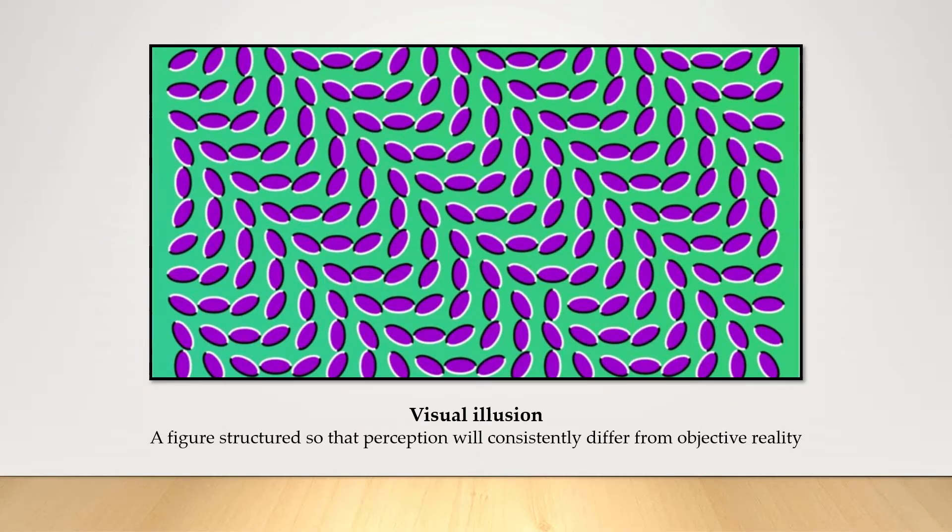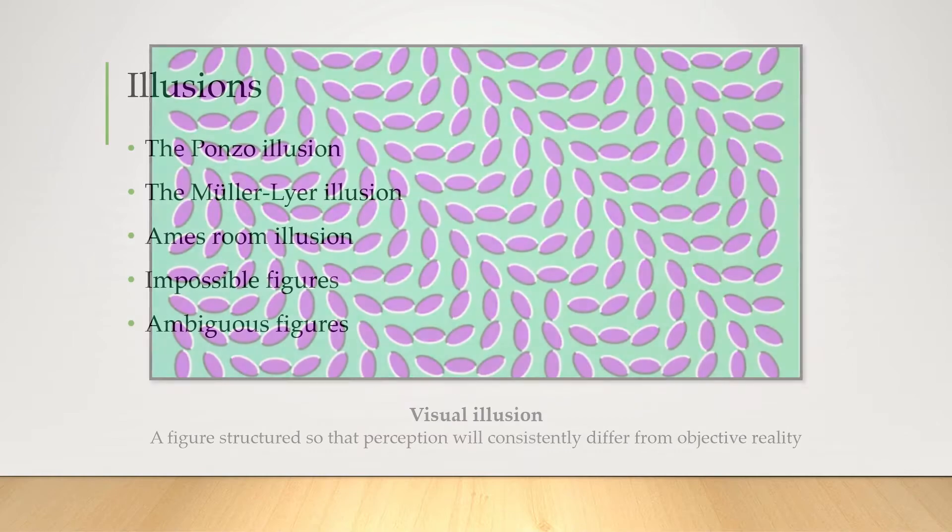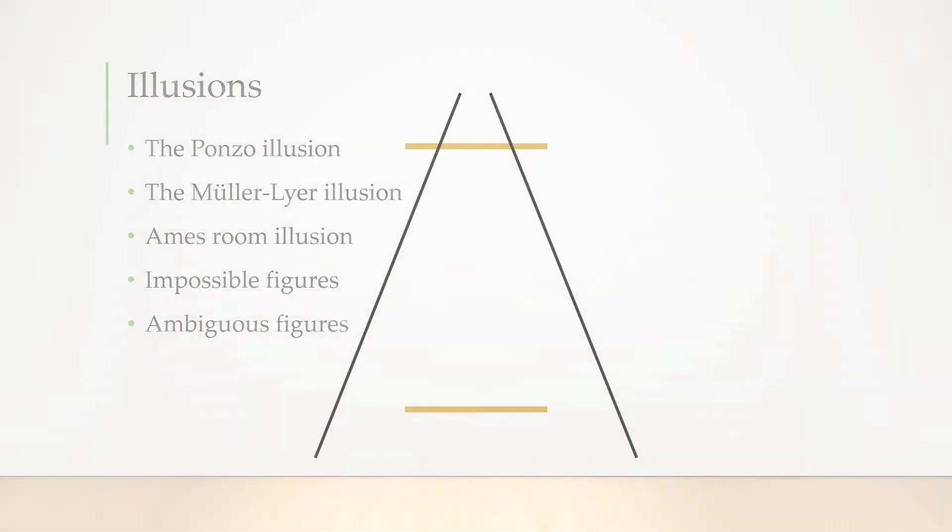Now illusions aren't just for fun, they're actually really well studied in psychology. Why? Well, illusions force the brain to make decisions about ambiguous images and that actually reveals a lot about how we perceive the world around us. We're gonna have a look at five types of illusions in this lesson, starting with this one.